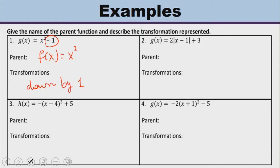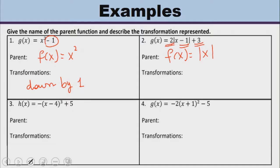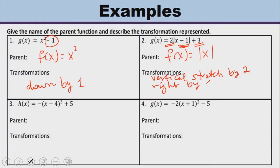For question number two, the parent function is the absolute value of x. I can see three transformations: the two, the x minus one, and the three. The two is outside and is greater than one, so that is a vertical stretch by a factor of two. The x minus one inside will cause it to move right by one. And the positive three will cause it to move up by three.